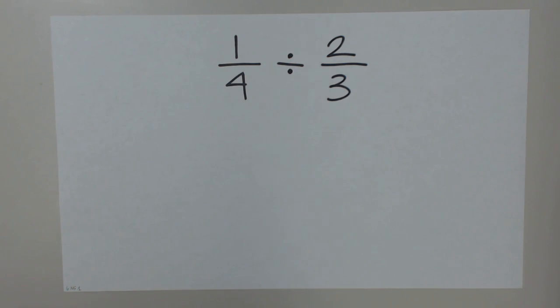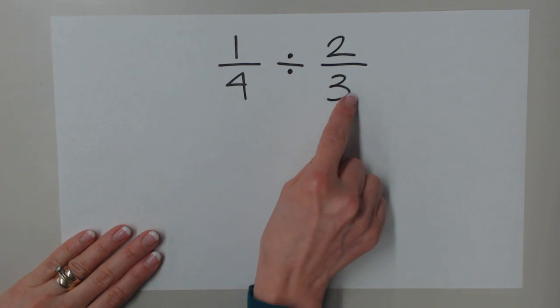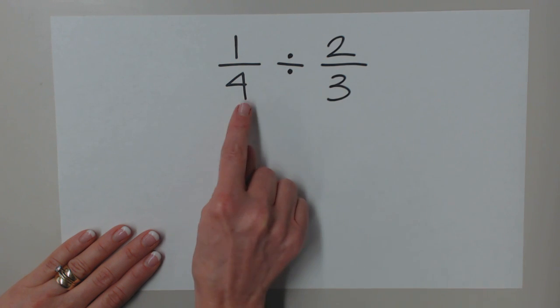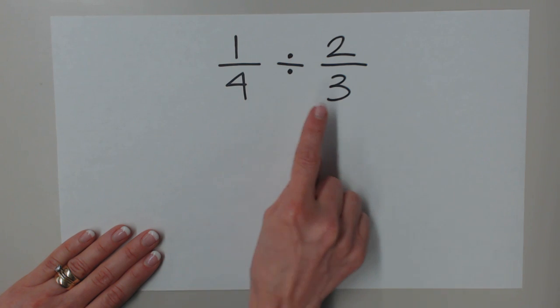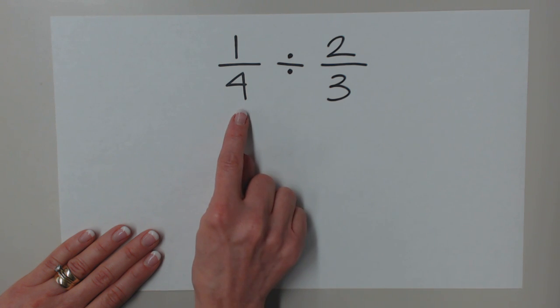If we read the problem correctly, it says how many two-thirds pieces fit into a piece that is one-fourth of a unit long. In order to answer that question, I have to build two-thirds of a unit, and I have to build one-fourth of the same unit.